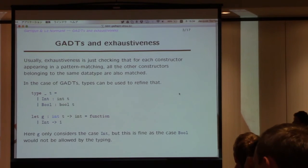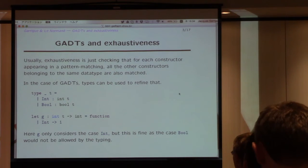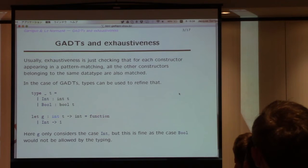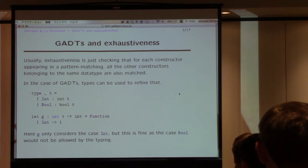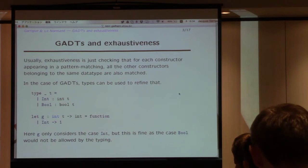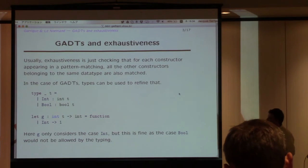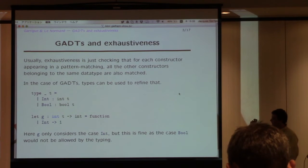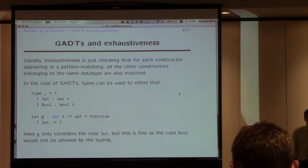And with GADTs, actually, we can do more, because then the types can be used to refine the information. And the classical example is, suppose that I have this GADT with case int and case bool. And the idea is that if I tell you that the function g is only taking as input an int, then I know that it can only receive the constructor int.